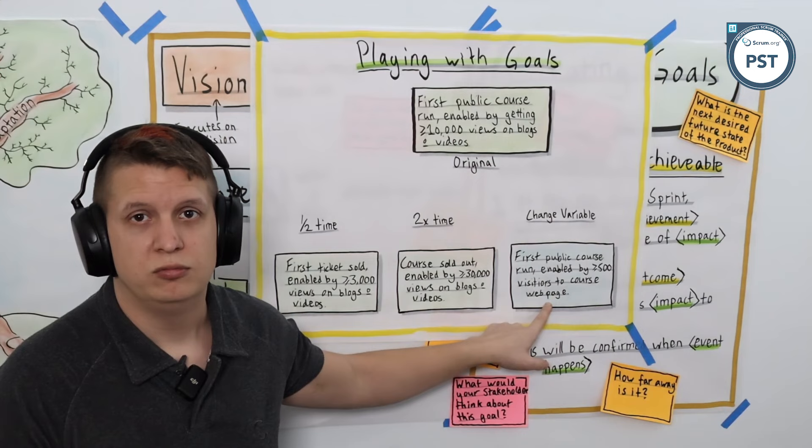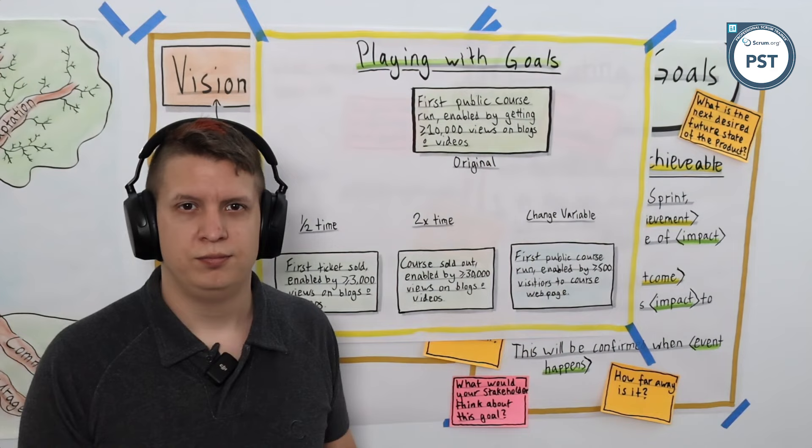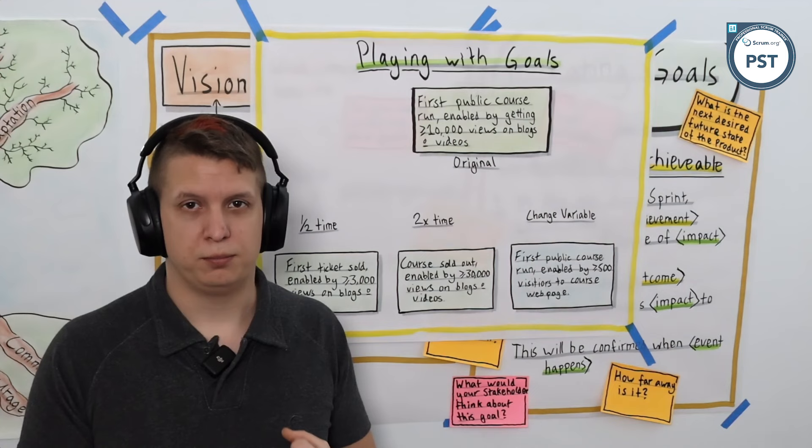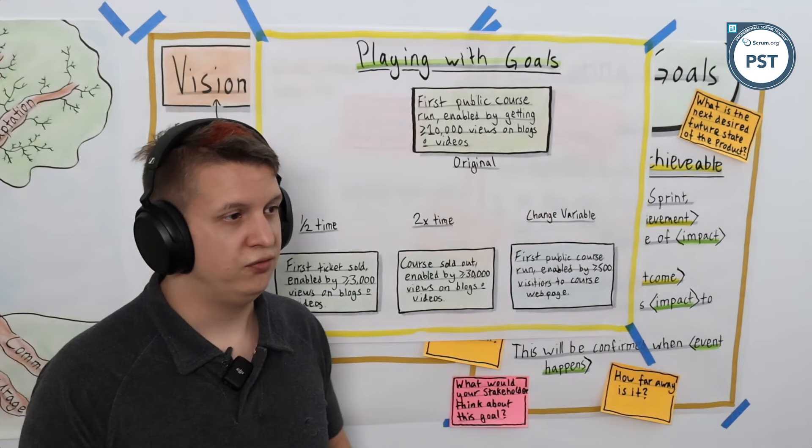This one does not. We could still be doing that, that could be part of the strategy, but it might not be the whole picture. So depending on how you tweak and play with your goals, be they sprint goals or product goals, you will change the items that get pulled into either the product backlog or sprint backlog.